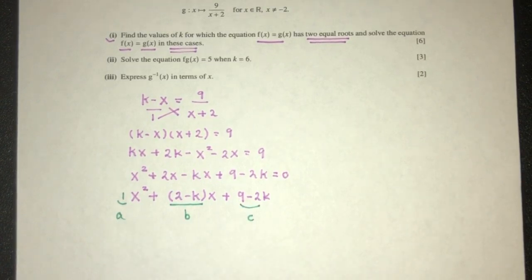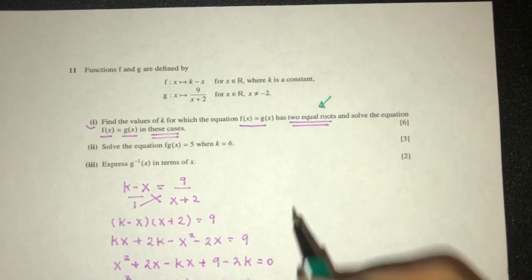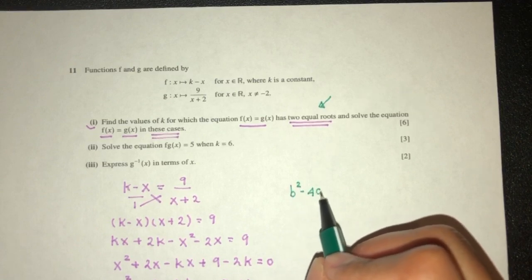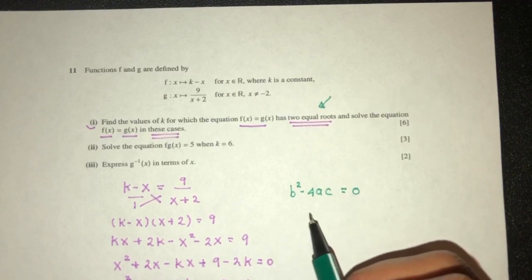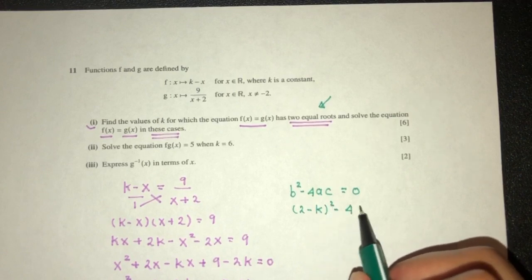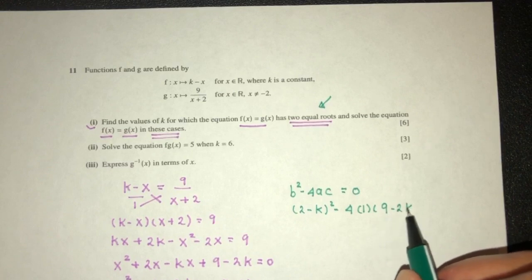Now given that they have two equal roots, it means that it will meet on only one point. So b² - 4ac have to be 0. So b² is (2 - k)² - 4 times 1 times (9 - 2k).